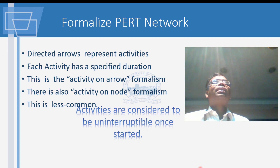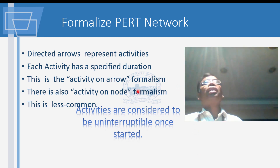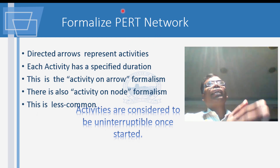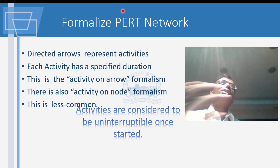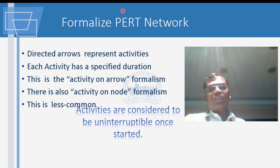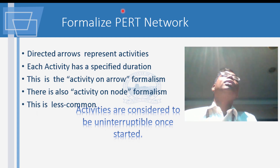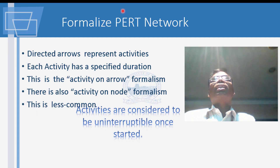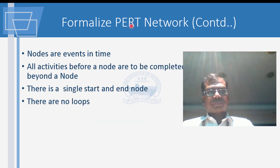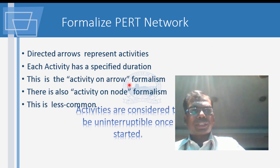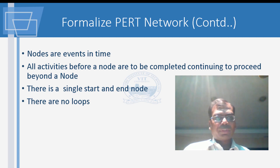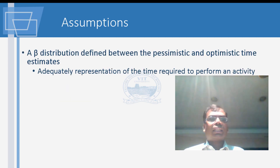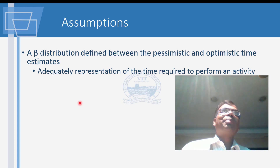PERT uses three measures of time. For example, traveling from central station to the airport: on a very good day you can reach in 20 minutes, but with traffic it could take two or three hours. Similarly for construction, you estimate an optimistic time — say finishing concreting in one day — but the most likely or pessimistic scenario is longer. PERT uses a beta distribution.